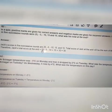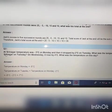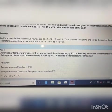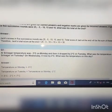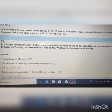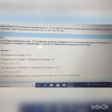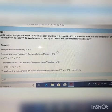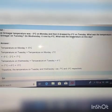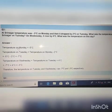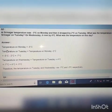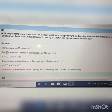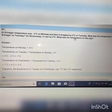Question 3. At Srinagar, temperature was minus 5 degrees on Monday. Means in the first sentence, they have given you the temperature of Srinagar on Monday, that is minus 5. And it dropped by 2 degrees on Tuesday. Means on Tuesday it dropped. Dropped means the temperature is decreased.